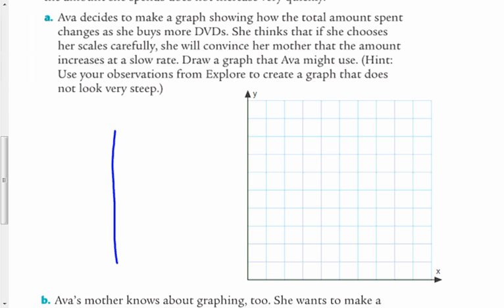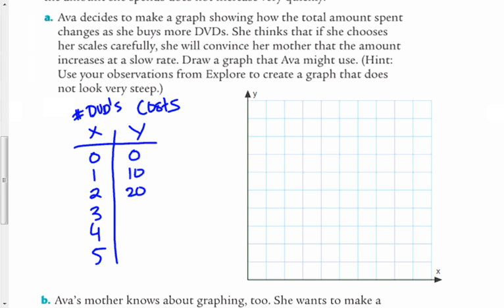So let's just make a quick table of values here. And this x is the number of DVDs she buys. And y is the cost of DVDs. And so this is a pretty simple one. 0 DVDs is 0, 1 is 10, 2 is 20, 30, 40, and so on.